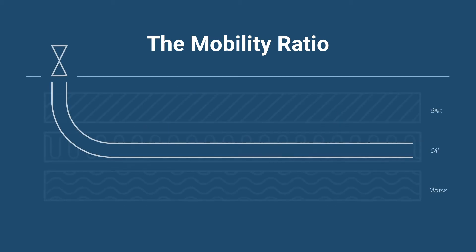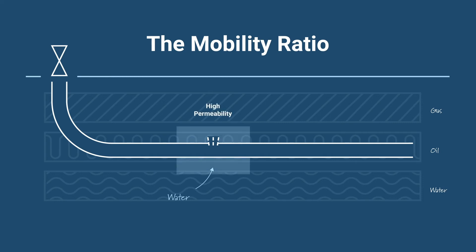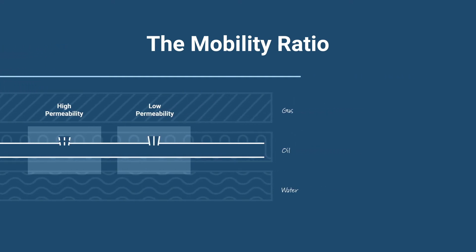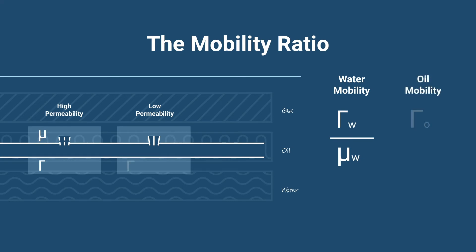Let's say we want to calculate the flow rate difference between the fluid of water in this high permeability zone and the fluid of oil in this low permeability zone. First, we have to define the water mobility, and we do that by dividing the permeability in the reservoir water zone by the viscosity of the water. Similarly, the oil mobility is defined as the permeability of an oil zone divided by the viscosity of the oil.